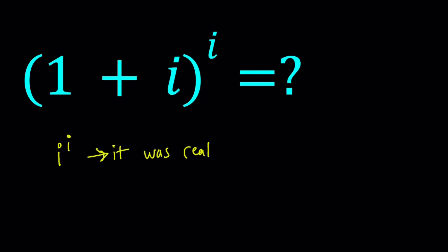Now, is this also real? Let's go ahead and ask Euler. Euler gave us a really nice formula for writing complex numbers in a much nicer compact form, and that's what we're going to use. But before that, let's go ahead and talk about the polar form of the complex number 1 plus i.